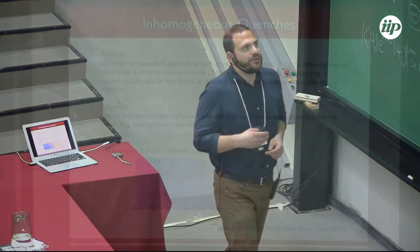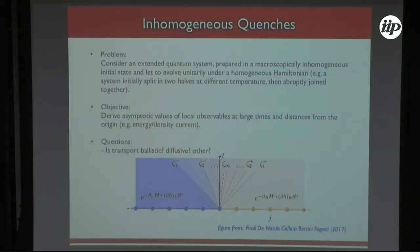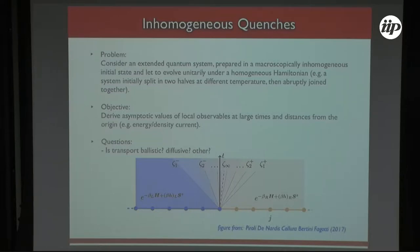Inhomogeneous quenches are when we prepare a quantum system isolated from the environment in a state that is macroscopically inhomogeneous, and then evolve with a Hamiltonian that is homogeneous. In this class belongs the so-called partitioning scenario, where the initial system is split into two halves that are at thermal states but with different temperatures on the left and right. Then we abruptly join them and want to see how energy flows from one side to the other.